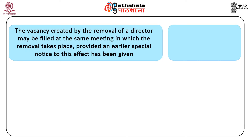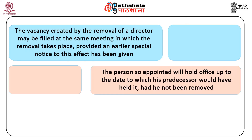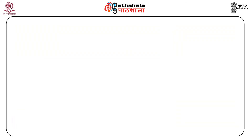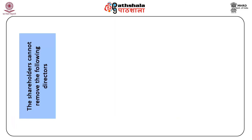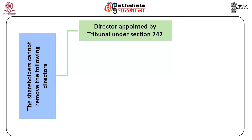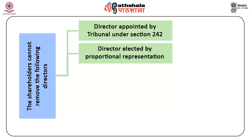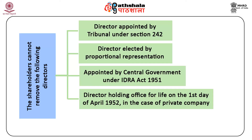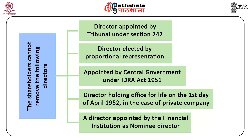The vacancy created by the removal of a director may be filled at the same meeting in which the removal takes place, provided an earlier special notice to this effect has been given to the members together with the removal notice. The person so appointed will hold office up to the date to which his predecessor would have held it had he not been removed. If the vacancy is not filled at the meeting, it may be filled by the board as a casual vacancy. However, shareholders cannot remove the following directors: director appointed by the tribunal under Section 242, director elected by proportional representation under Section 163, director appointed by the central government under the IDRA Act 1951, director holding office for life on the first day of April 1952 in the case of a private company, and director appointed by a financial institution as nominee director.